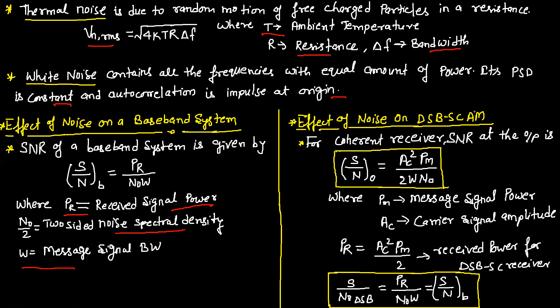Effect of noise on DSBSC amplitude modulation. For a coherent receiver, SNR at the output equals AC²·PM / (2·W·N0), where PM is the message signal power and AC is the carrier signal amplitude. The received power for DSBSC is PR = AC²·PM / 2. Therefore, SNR of DSBSC equals PR / (N0·W), which equals the baseband SNR.